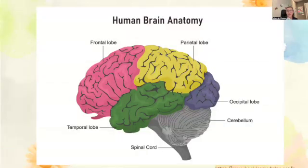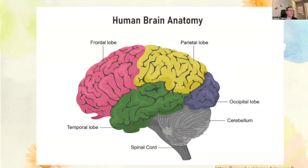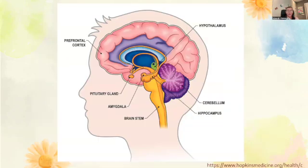Here's an image of the anatomy of the brain showing the frontal lobe, temporal lobe, parietal lobe, occipital lobe, and cerebellum. Take a moment, pause, and see if you can identify the function of each of those areas. Here's another image showing the prefrontal cortex, hypothalamus, amygdala, cerebellum, and hippocampus — see if you can identify the functions of each of those parts of the brain.